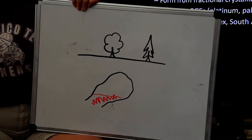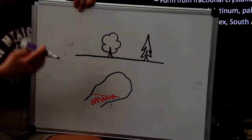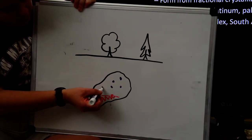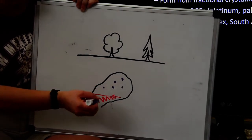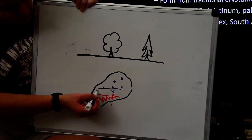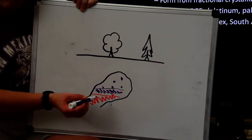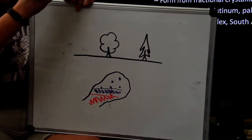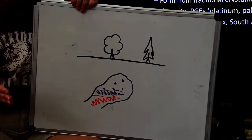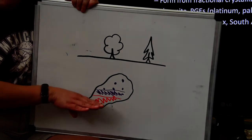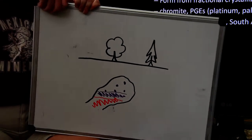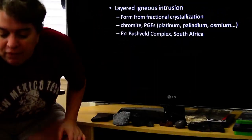As the liquid rock cools down more, maybe a second mineral forms and also sinks, creating another layer. That process continues until all of the magma has cooled and become solid. That's why it's a layered igneous intrusion — it has these very distinctive different layers within it.